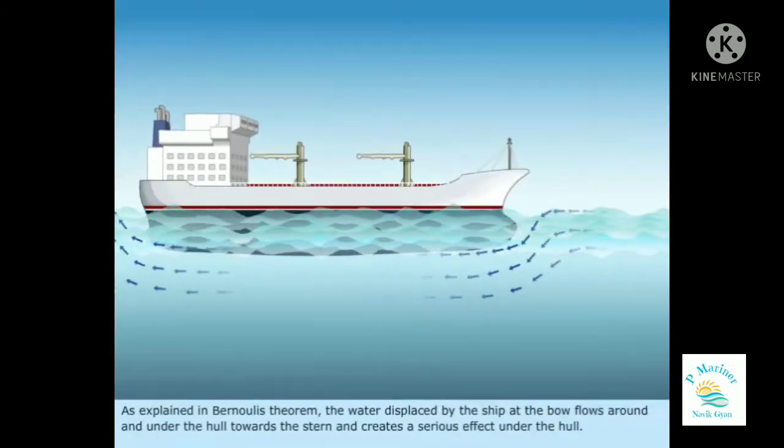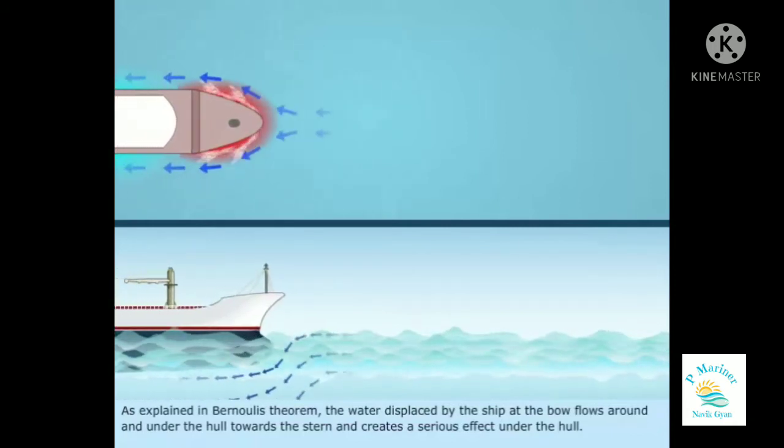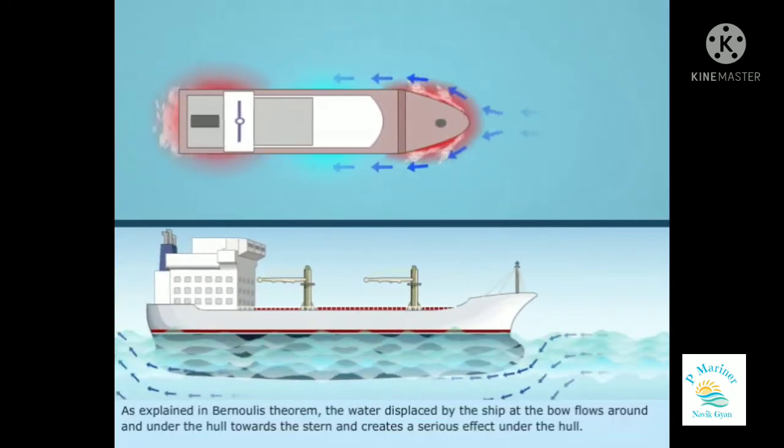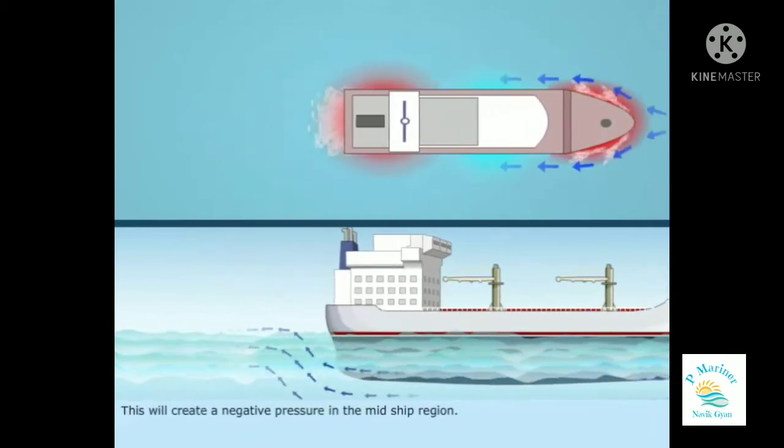As explained in Bernoulli's theorem, the water displaced by the ship at the bow flows around and under the hull towards the stern, and creates a venturi effect under the hull. This will create a negative pressure in the midship region.